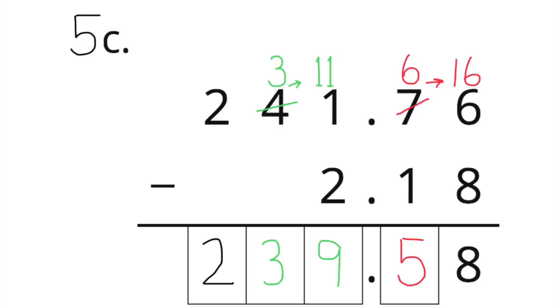Part C: 241.76 minus 2.18. The difference is 239.58.